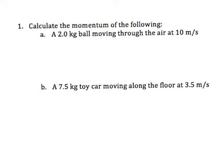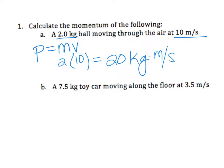We're going to use our momentum formula, which is P equals mv, or mass times velocity. For A, we have a 2 kg ball moving through the air at 10 m/s. We'll plug in 2 for our mass and 10 for the velocity, then multiply that in the calculator to get 20. The units for momentum is kilograms times meter per second—there's not a special unit for it.